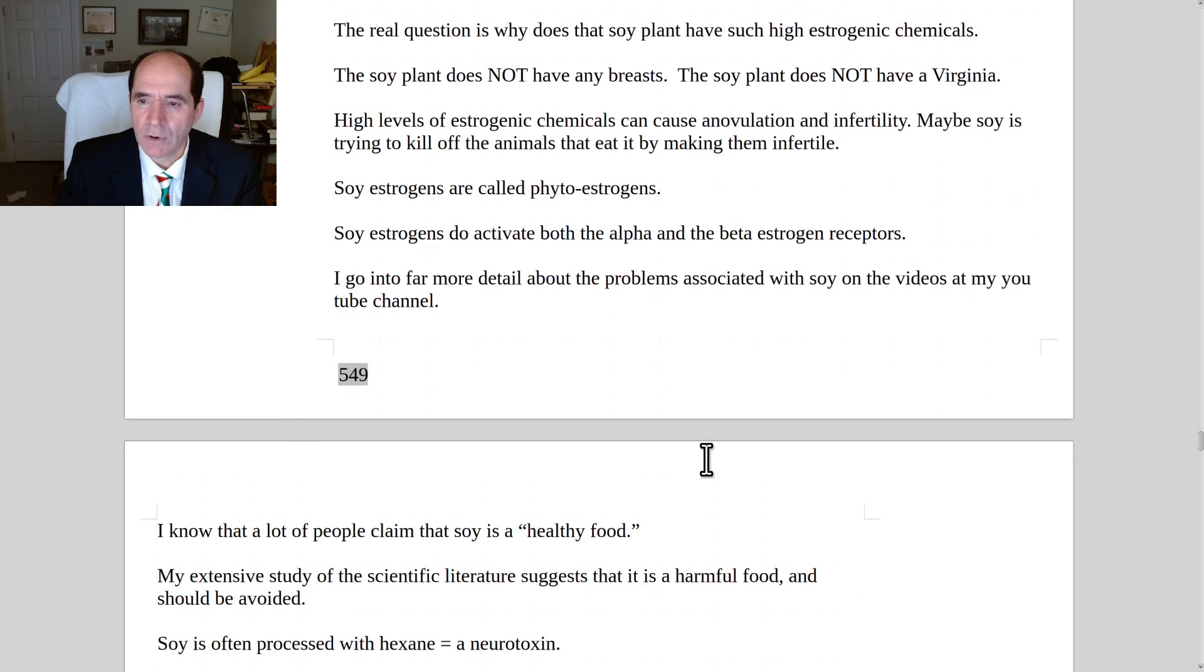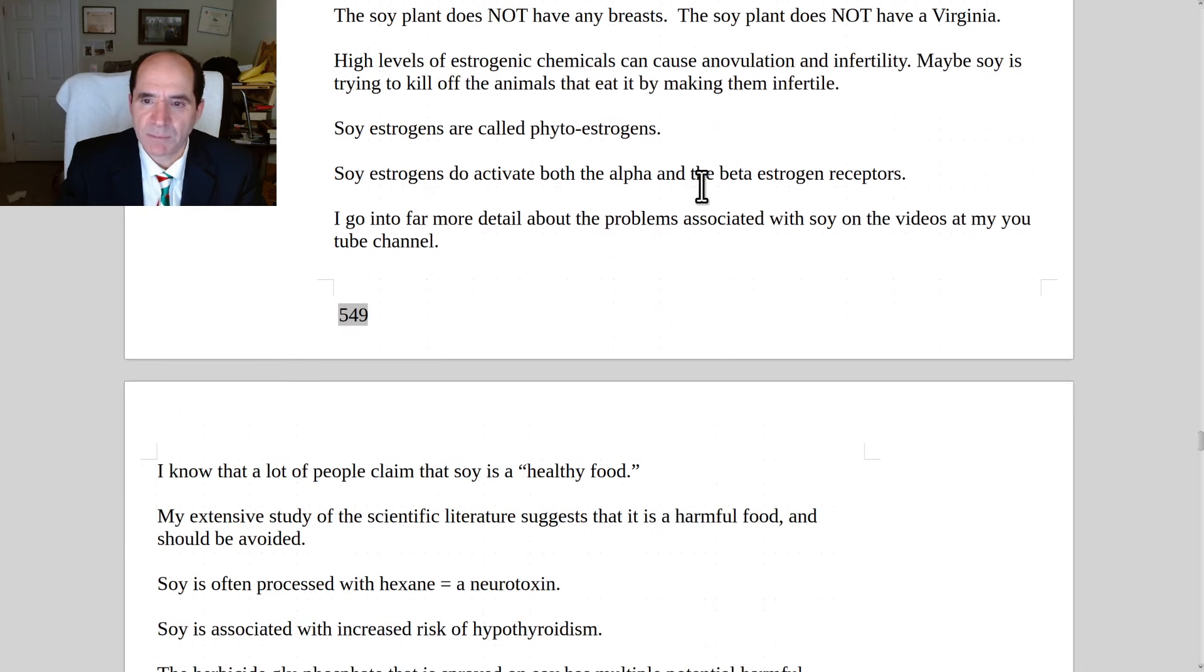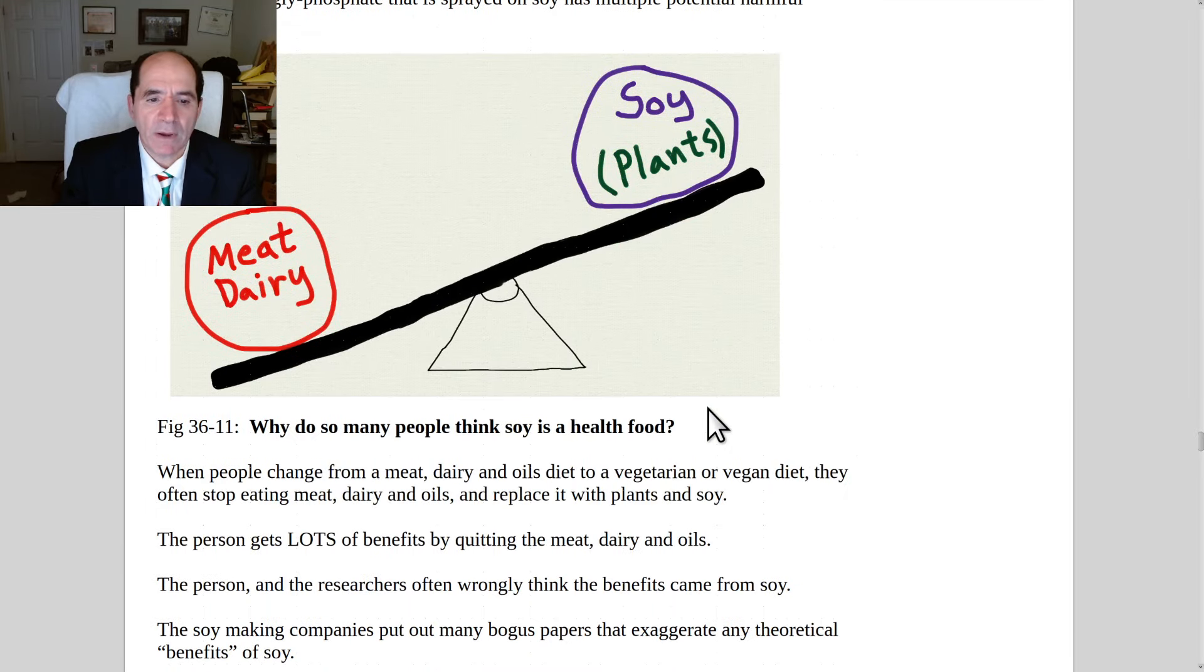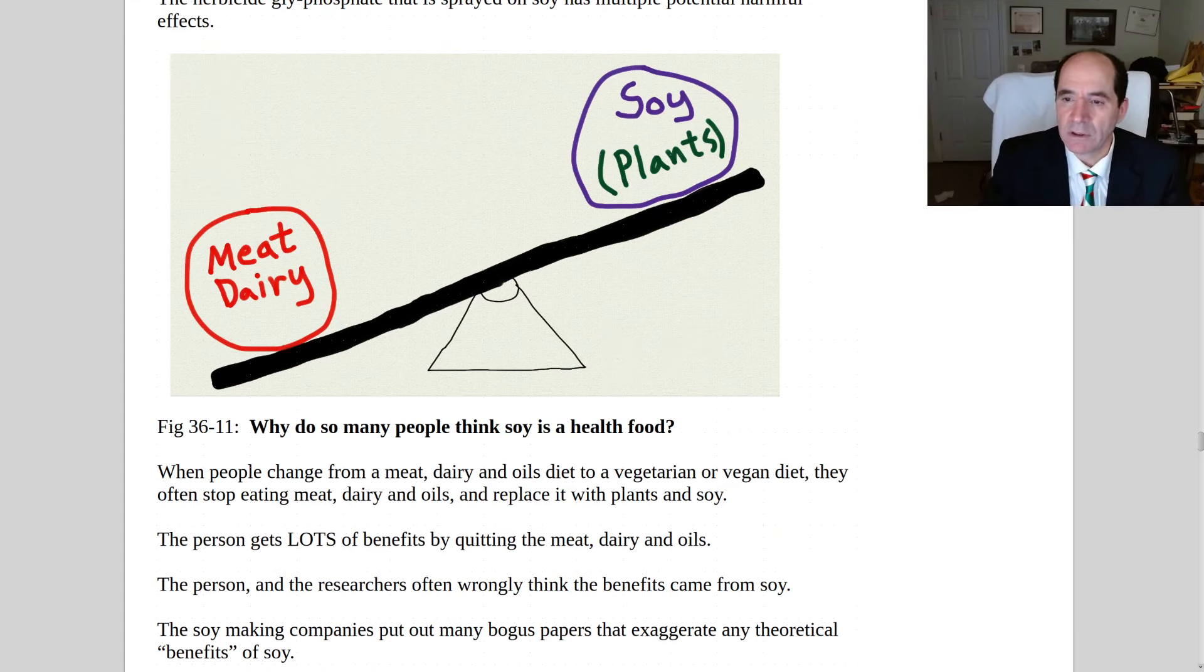I think it's one of the most overrated foods. Activates both the alpha and the beta estrogen receptors. Why do I think soy has got a reputation as being so healthy? Well, first of all, big money wants it in the processed food to sterilize the low IQ proles. Secondarily, people say, oh well, the Asians ate it. They don't have any problem having babies. They ate tiny amounts that grow in their backyard that was unprocessed with nothing sprayed on it.